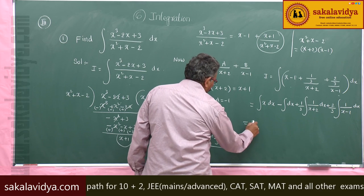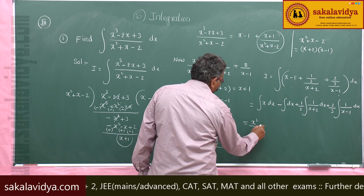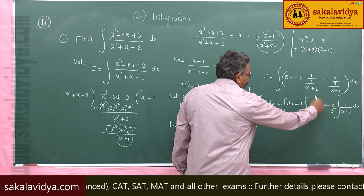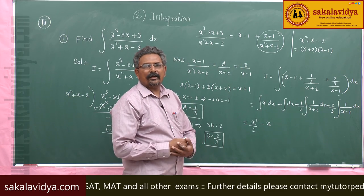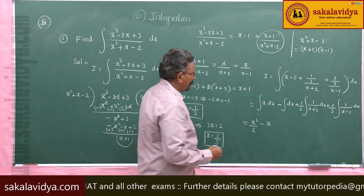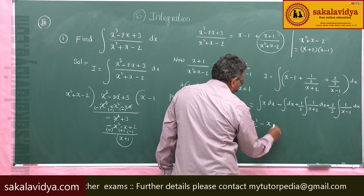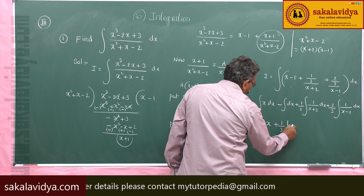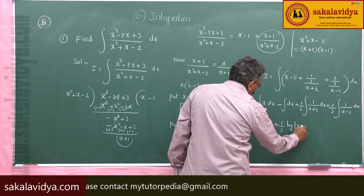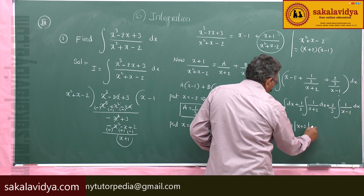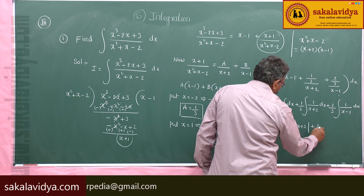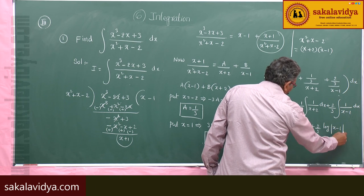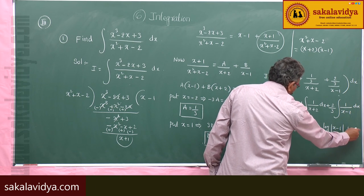This gives x²/2 minus x, since the integral of 1/x dx is log|x|. So the result is x²/2 − x + (1/3) log|x + 2| + (2/3) log|x − 1| + C.